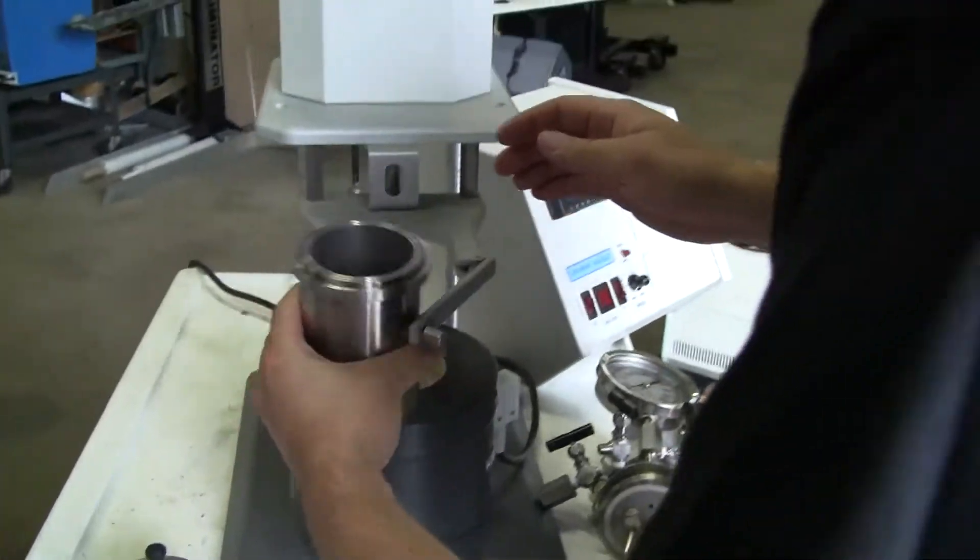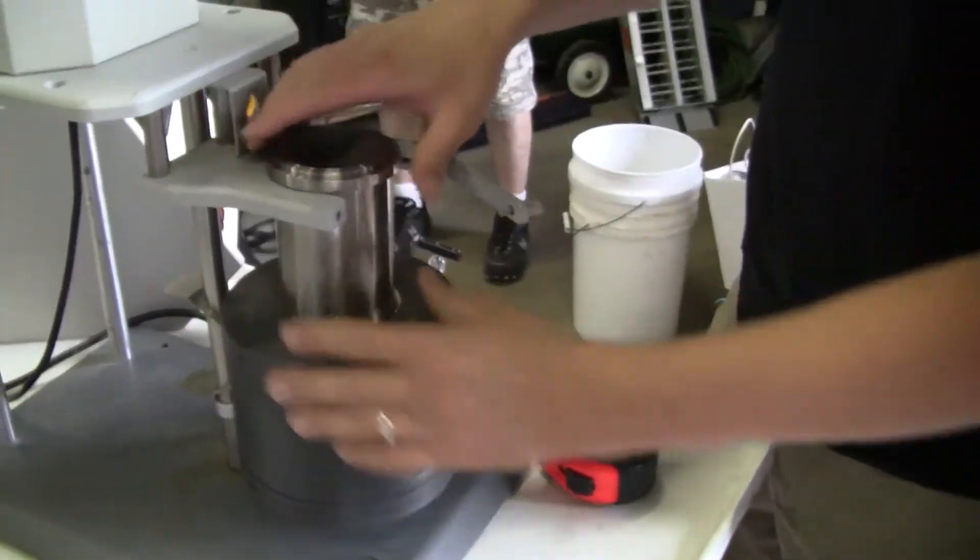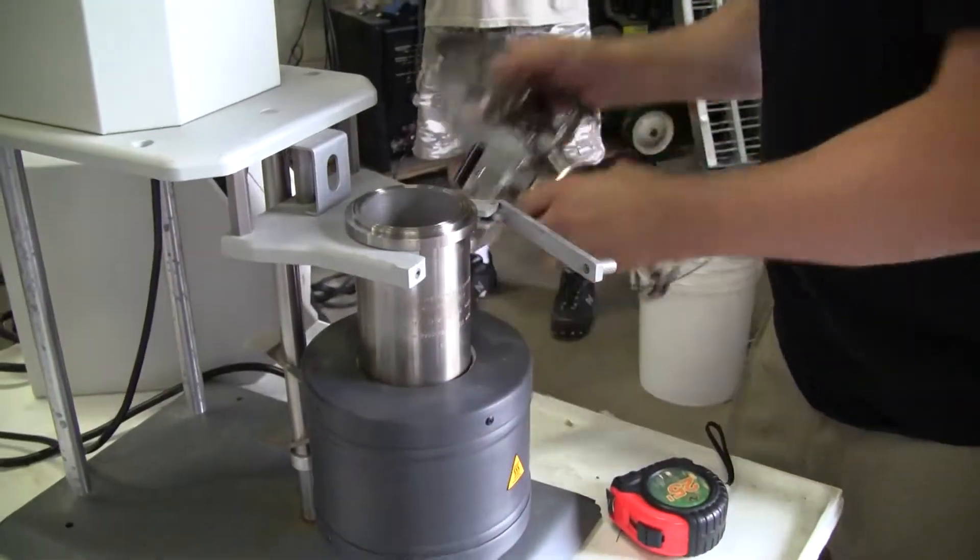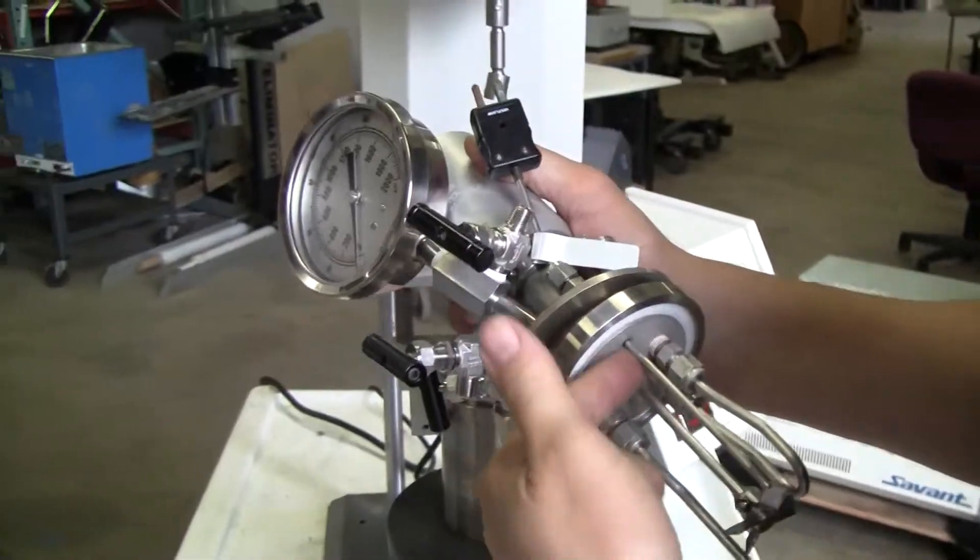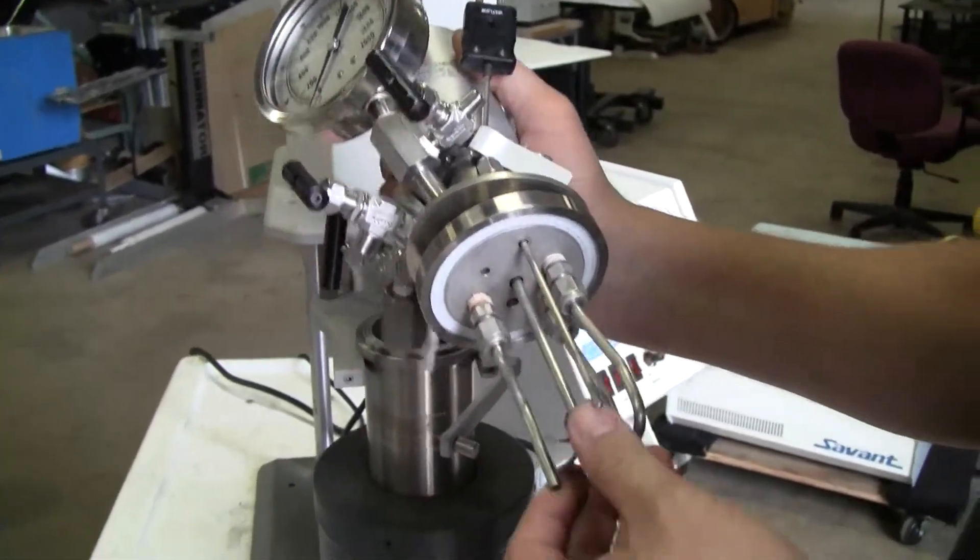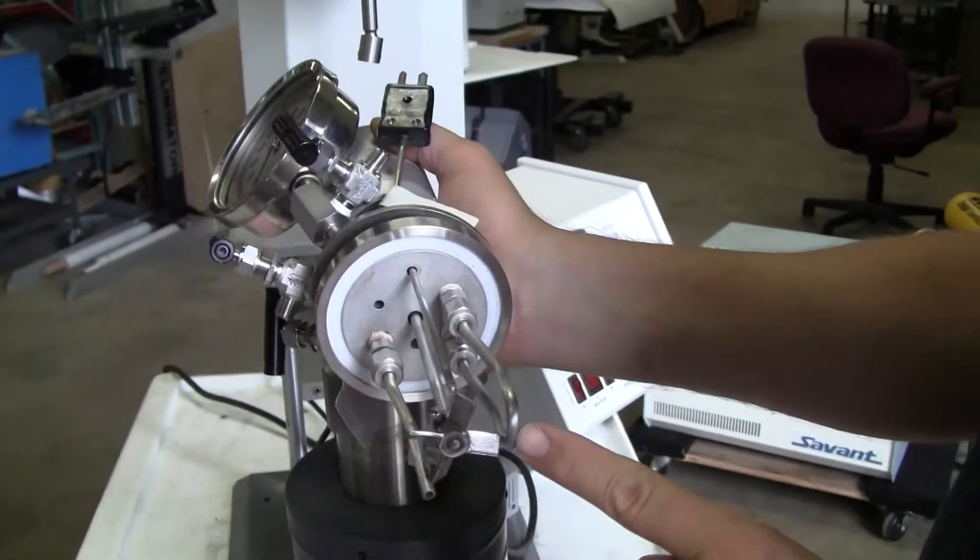The reactor fits in its little shell. Here's the reactor top. This is the thermocouple going into the thermocouple well. Impeller, gas, heat exchanger.